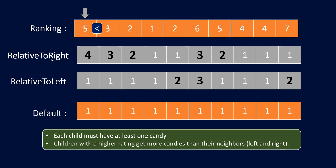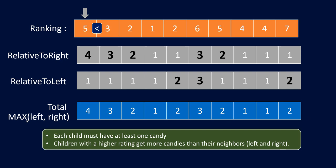Now the number of candies we actually need to give would be the maximum when taking into consideration both left and right. So that gives us the array which is max of left and right. For example, 4 and 1 — so we give 4 candies, and the total for this becomes 21. For this approach, we iterate over our array once from the front and once from the back, storing the candies a person should get with respect to left and right neighbors, and finally combine the result. Let's go ahead and code this out, and then we will see a more optimized version.